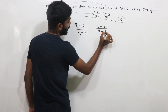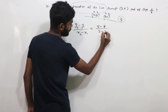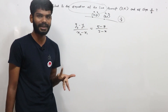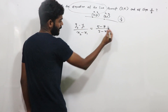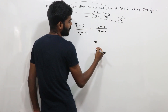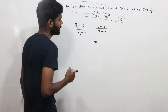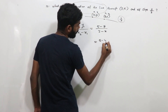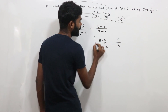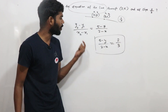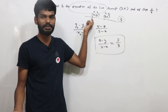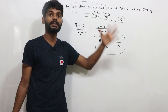First, y2 minus y1 — that is 5 minus y by 2 minus x — this is the slope. We apply it: (5 minus y) by (2 minus x) equals 2/3. This is the form of a straight line. If you have a point (x, y) in general on this line, that is the form.